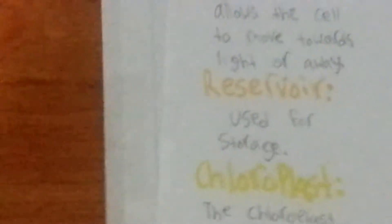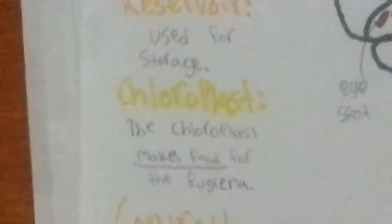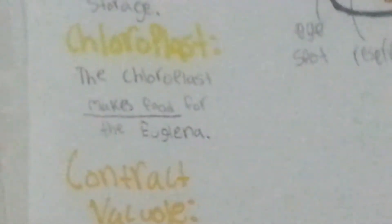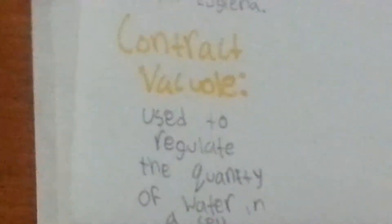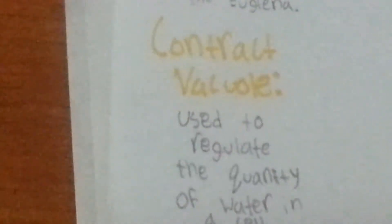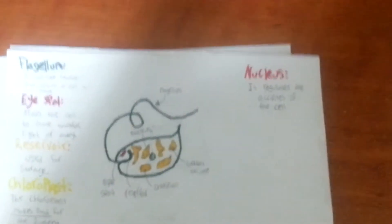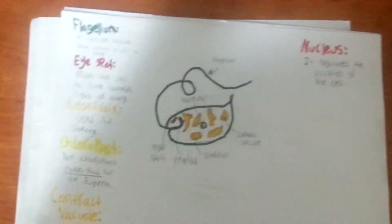First of all, the reservoir is used for storage. The chloroplast makes food for the euglena. When it can't get its own food, it makes its own food. The contractile vacuole is used to regulate the quantity of water in a cell. And last but not least, the nucleus — the most important — it regulates the activities of the cell.